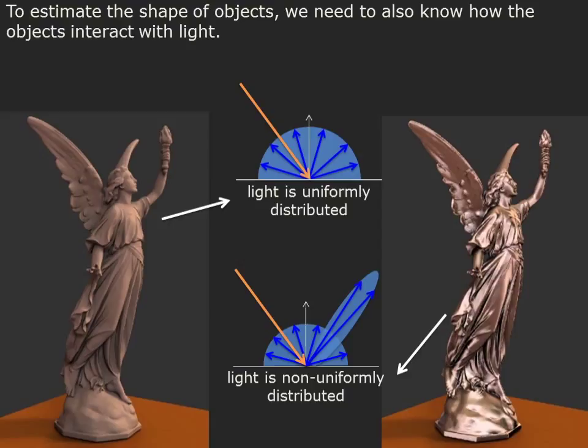The first step is to understand how objects interact with light. The object on the left scatters light uniformly, hence its appearance as a matte finish. The object on the right, however, concentrates light in certain directions, and this leads to distinctive shine.